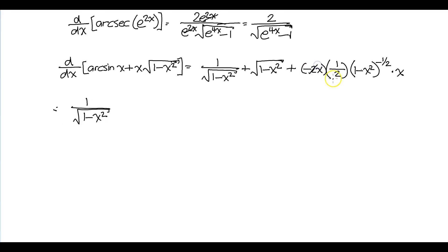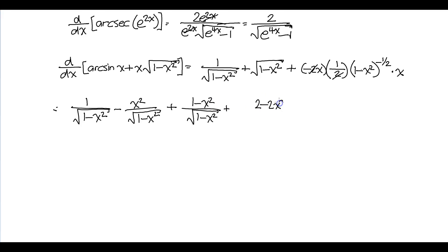So we have minus x squared over the square root of 1 minus x squared. We need a common denominator, so if we multiply by the square root of 1 minus x squared, we get 1 minus x squared over the square root of 1 minus x squared. Now if we add these together, we get 2 minus 2x squared over the square root of 1 minus x squared, and you can simplify it further as 1 minus x squared times the square root of 1 minus x squared.